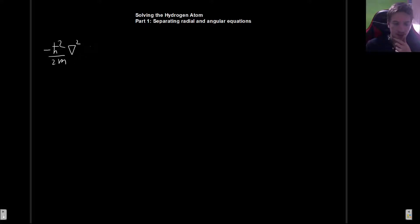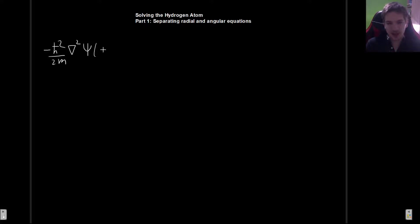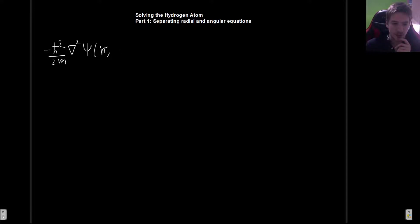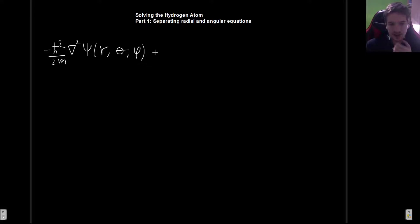We're going to have the Laplacian acting on our wave function, which now depends on whatever coordinates we choose. In this case we are dealing with a problem that has spherical symmetry because we expect the potential to only depend on distance, not on angle. So we pick spherical coordinates: r, the distance between the electron and the proton, and angles θ and φ.